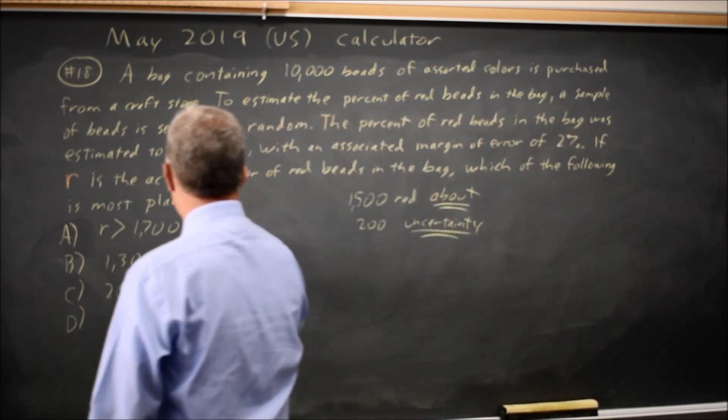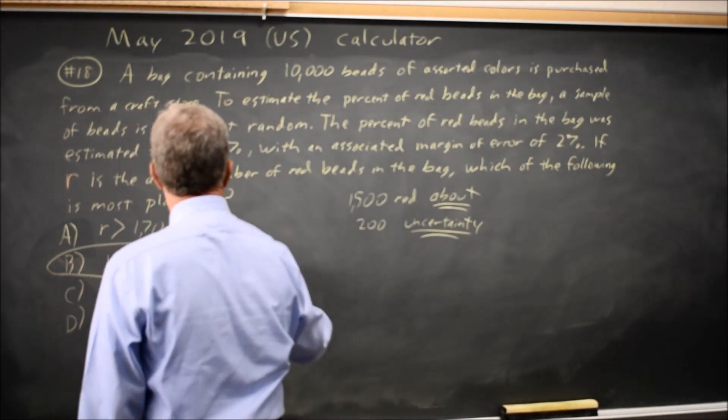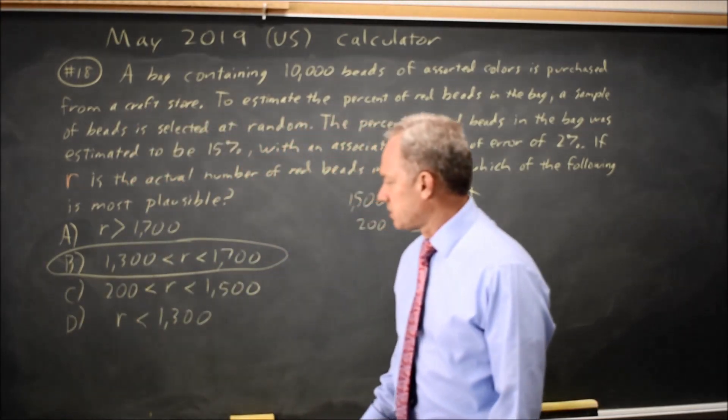So if R is the number of red beads, choice B is exactly what that margin of error tells us.